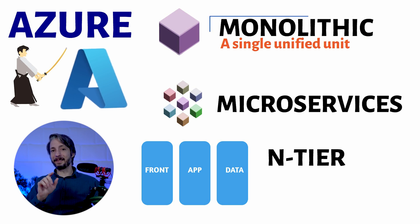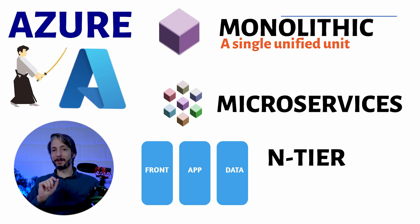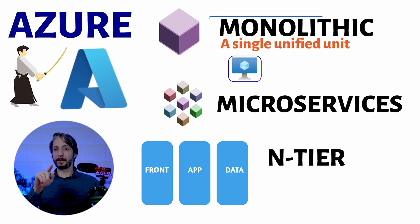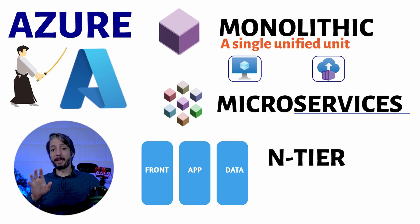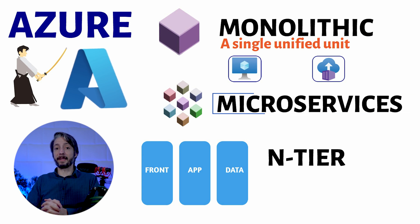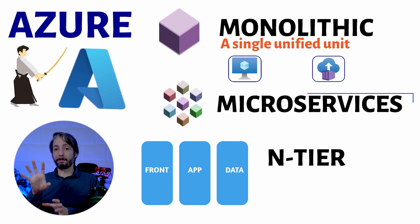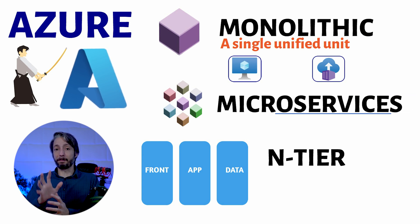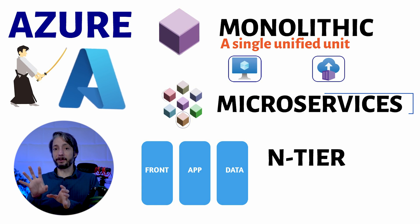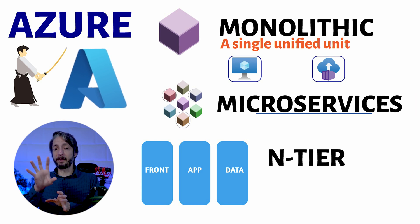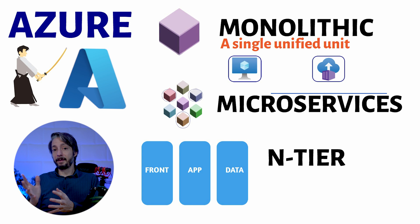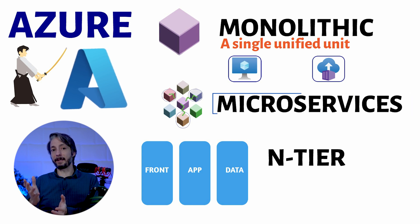With a monolithic application, the entire application is contained in, for example, a virtual machine or a container. A microservices application has different parts of the application split up in different units. The different parts of the application run independently of one another, and they usually communicate with each other in some form of API.